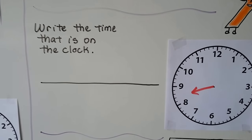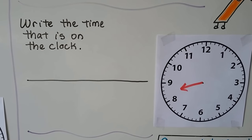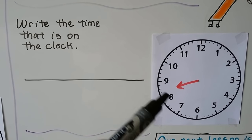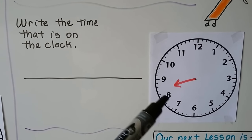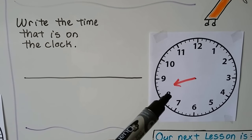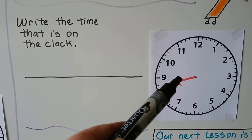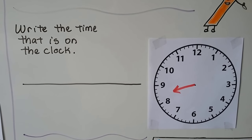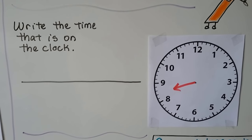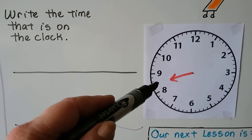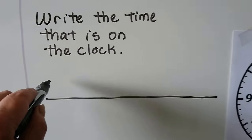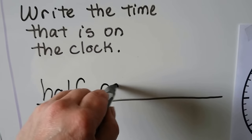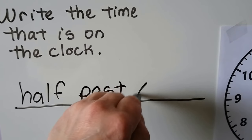Write the time that is on the clock. The hour hand is in between the eight and the nine, so it's not nine o'clock yet, and it's not eight o'clock because it's past it. It's in between the eight and the nine. It's half past eight. We write: half past eight o'clock.